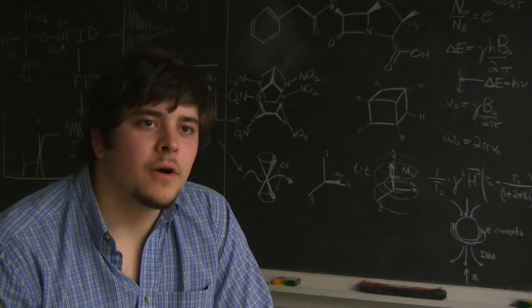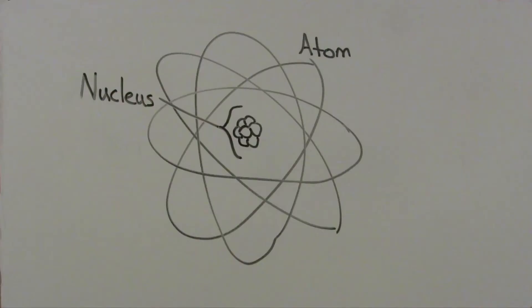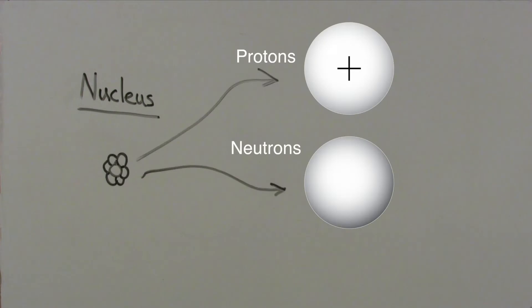To understand how the NMR works and what its data means, we need to begin at the atom. Within the nucleus of the atom, there are protons and neutrons. Protons and neutrons have an intrinsic property of one-half spin.